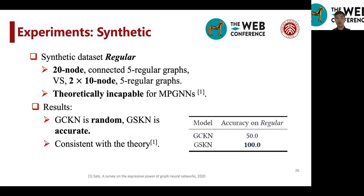And also, we generate another synthetic dataset called regular. In this dataset, we generate two types of graphs. The first is a 20-node connected five-regular graphs versus two 10-node five-regular graphs.